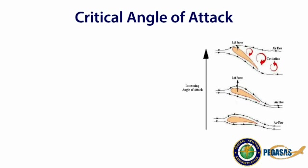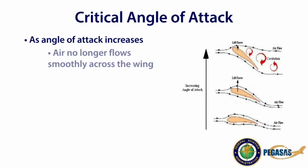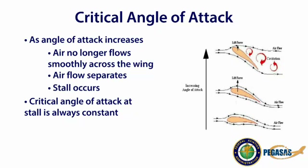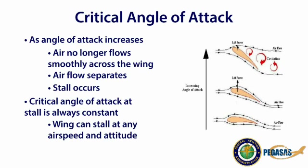The critical angle of attack is the point at which, as the angle of attack increases, air will no longer flow smoothly over the wing. When this happens, the airflow separates from the surface of the wing, resulting in a stall. The critical angle of attack, or the angle at which the stall occurs, is always constant for a given airfoil in a given configuration. Since the stalling point is only affected by the angle of attack, it is important to note that the wing can stall at any airspeed and any attitude.